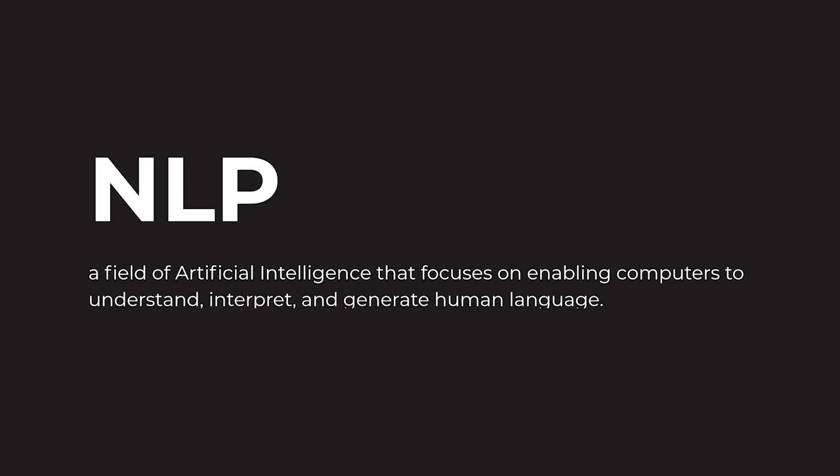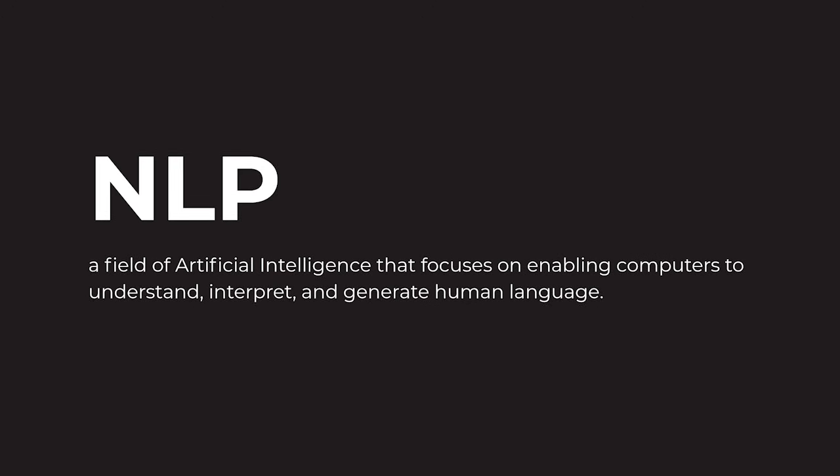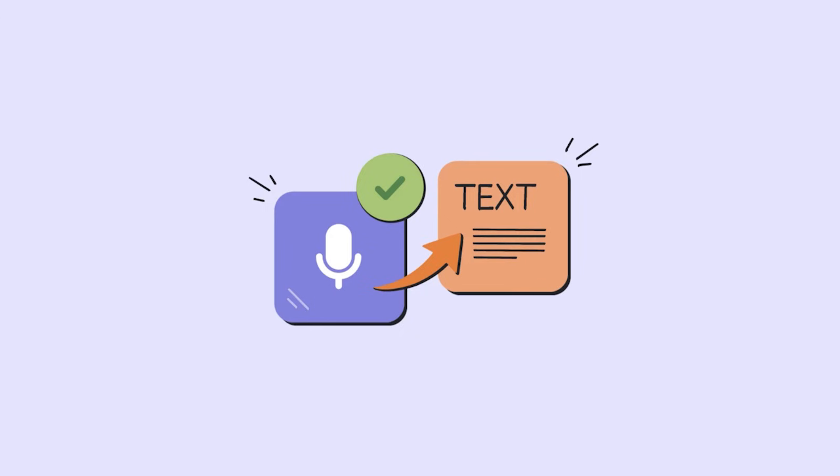The first subfield is NLP — Natural Language Processing. NLP means that machines understand human language. For example, you can talk or input audio text and translate it in Google Translate. That is NLP.